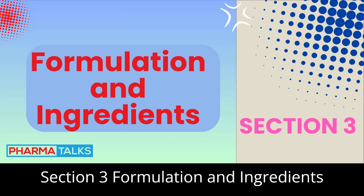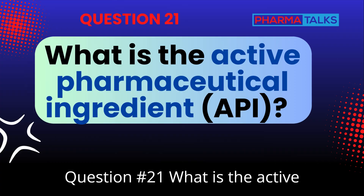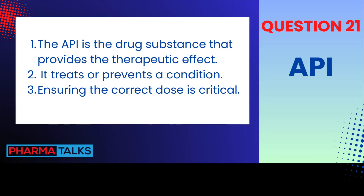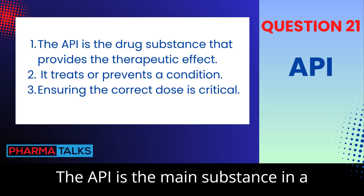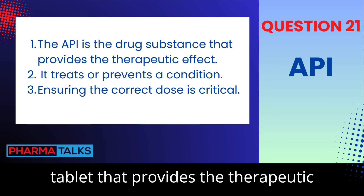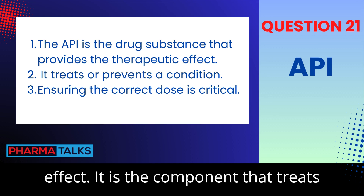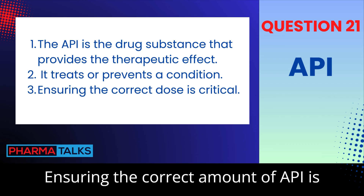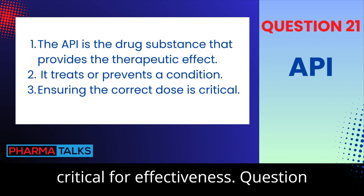Section 3: Formulation and Ingredients. Question 21: What is the active pharmaceutical ingredient (API)? The API is the main substance in a tablet that provides the therapeutic effect. It is the component that treats or prevents a specific medical condition. Ensuring the correct amount of API is critical for effectiveness.